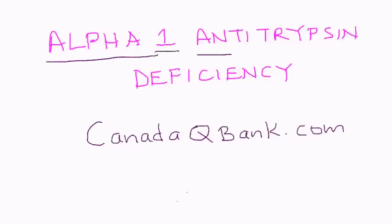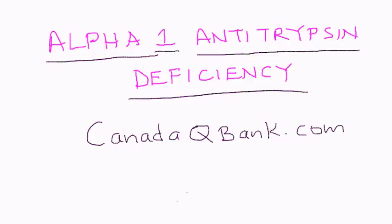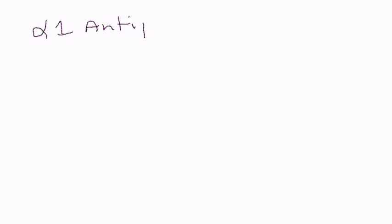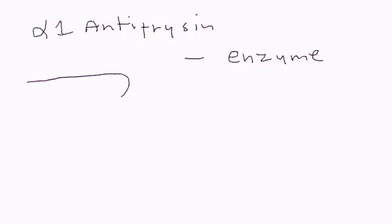Alpha-1 antitrypsin deficiency is the topic for this video. Before we get started, it's important to talk about the players involved in this disorder. The first one is alpha-1 antitrypsin — the main player. Alpha-1 antitrypsin is an enzyme and it is produced in the liver.